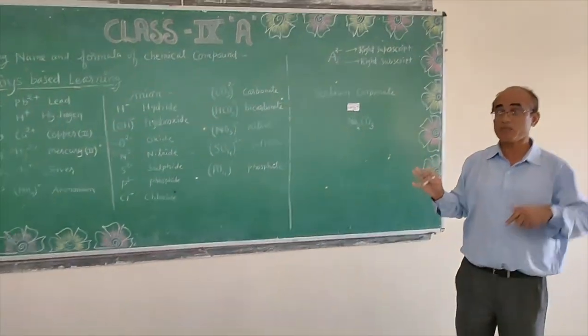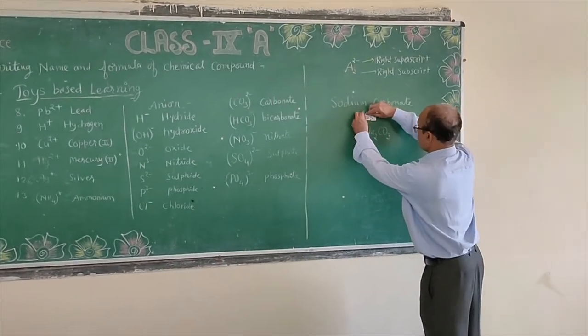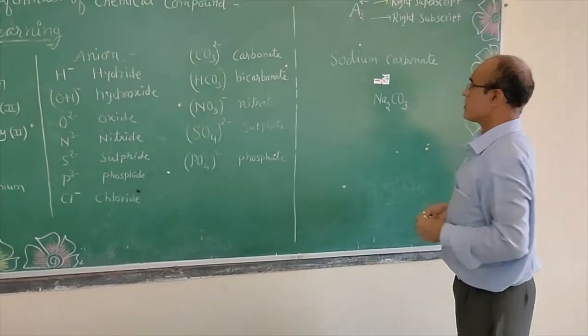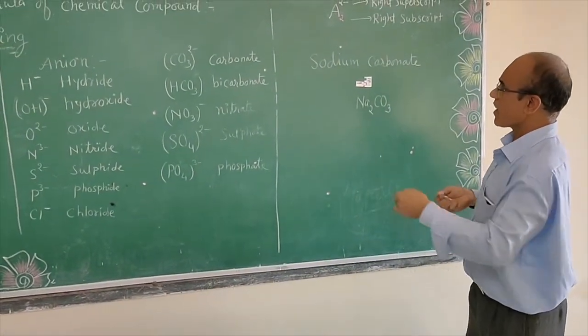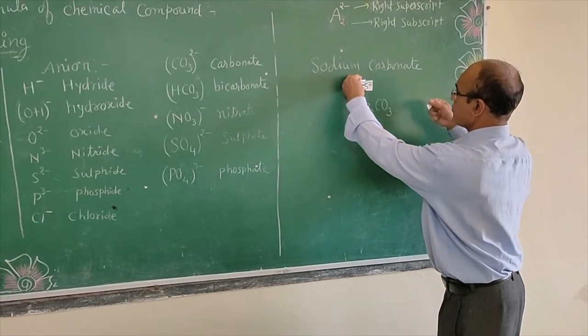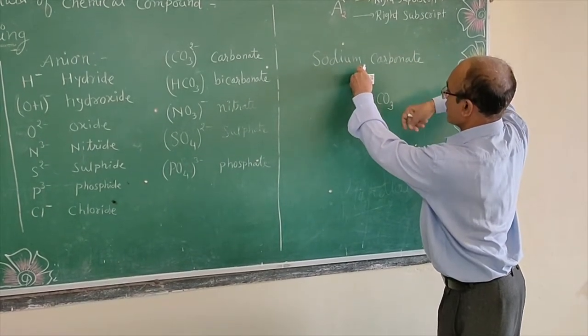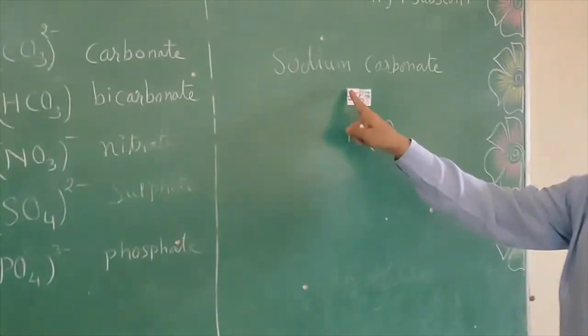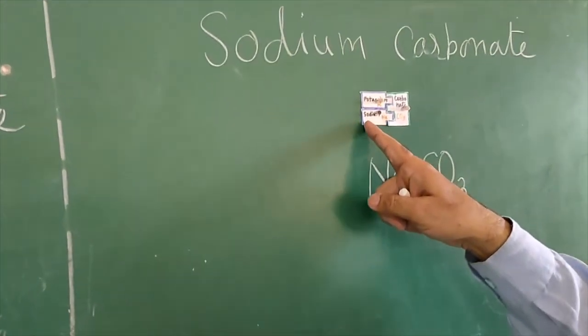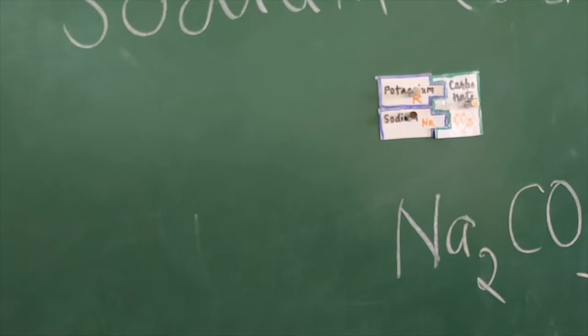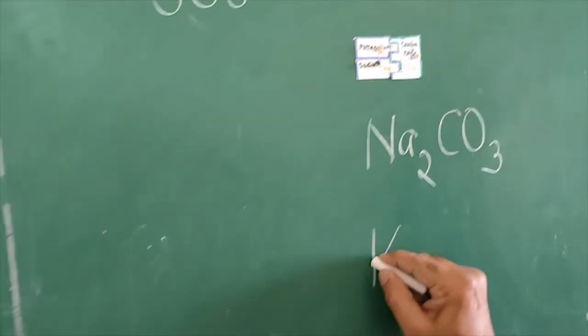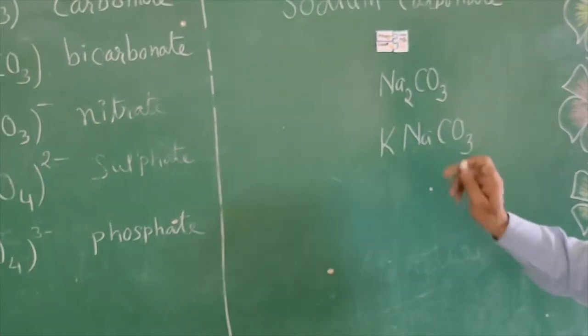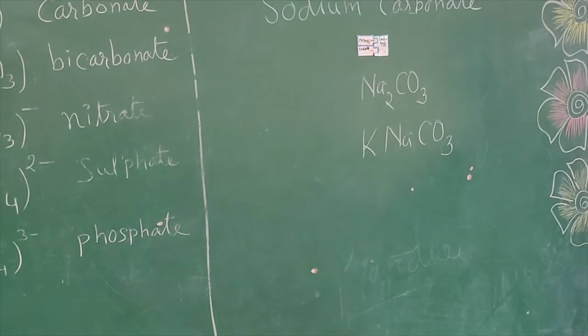Now see what we can do by using toys. Others cannot imagine, but we can do this. Suppose I have sodium. Now sodium is monovalent. I can satisfy this by another monovalent, that is potassium. Potassium has lower electronegativity. And that's why I am writing about one potassium, one sodium, and one carbonate. So what will be the formula of this compound? Potassium sodium carbonate. This compound is also possible.